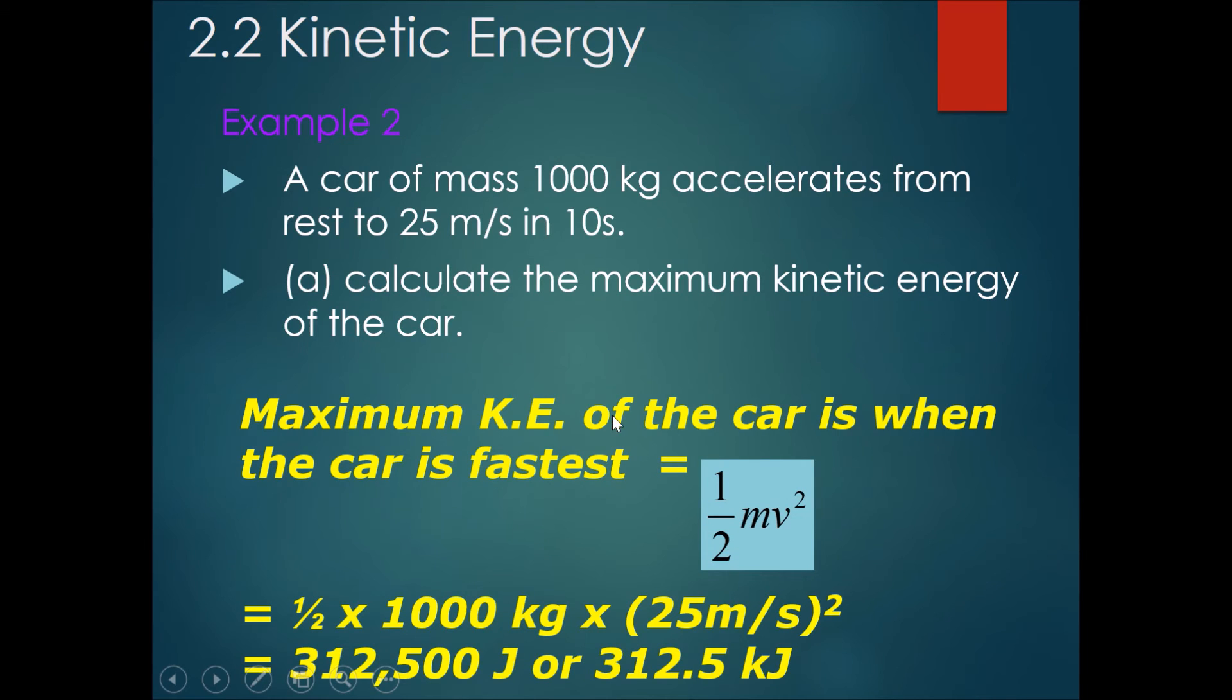Okay, the maximum KE of the car is when the car is at its fastest, which would mean at 25 meters per second. So using the formula as shown below and substituting in, half times 1000 kg times 25 squared should get you 312,500 joules.